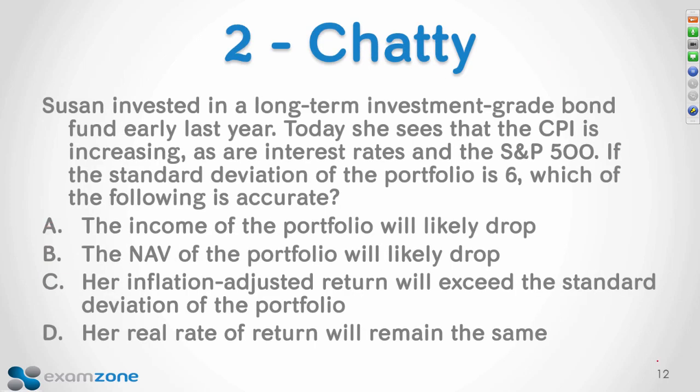For chatty questions, don't use blanket statements like 'when in doubt, C is correct' or 'the longest answer is right' — there's no research behind that. You have to take apart the question. A bond investor seeing a rising CPI and rising interest rates — the S&P 500 data is irrelevant since she's a bond investor; the standard deviation of six has no matching calculation in the answer choices. What matters is she's in a long-term investment-grade bond fund, the CPI is rising, and interest rates are rising.